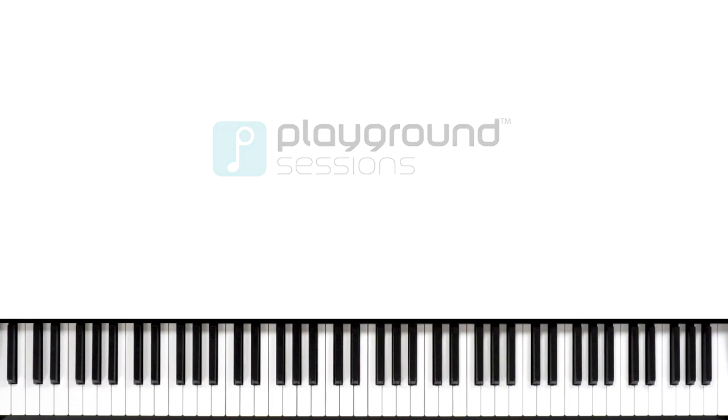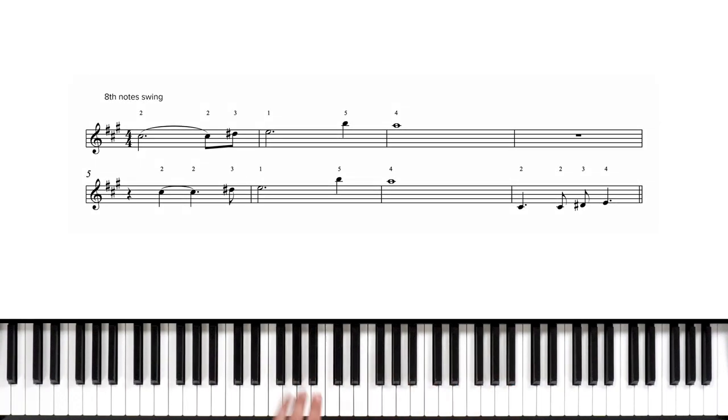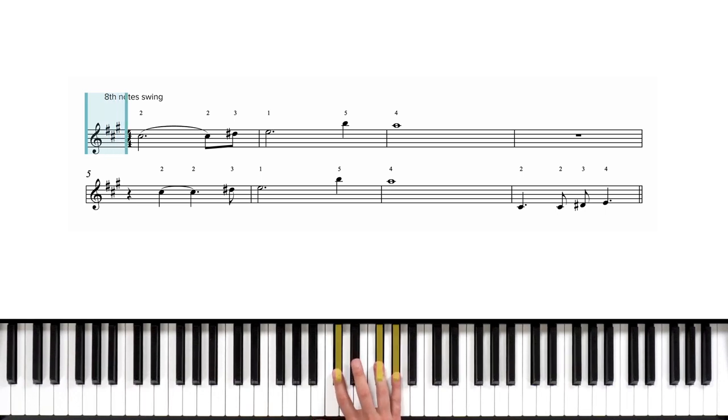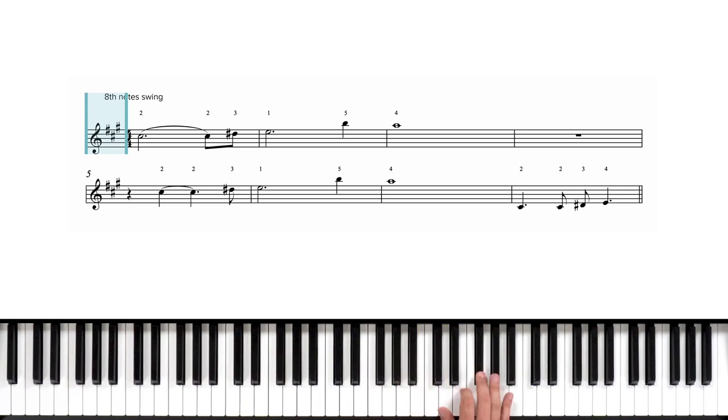I'll start by breaking down the right hand first. First off, our key signature tells us that we have three sharps. All Fs, Cs, and Gs are automatically going to be F sharps, C sharps, and G sharps. This is the key of A major.